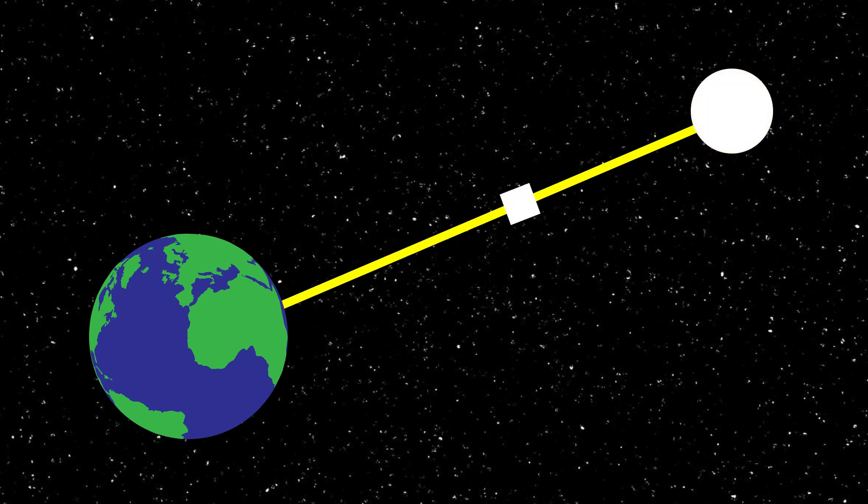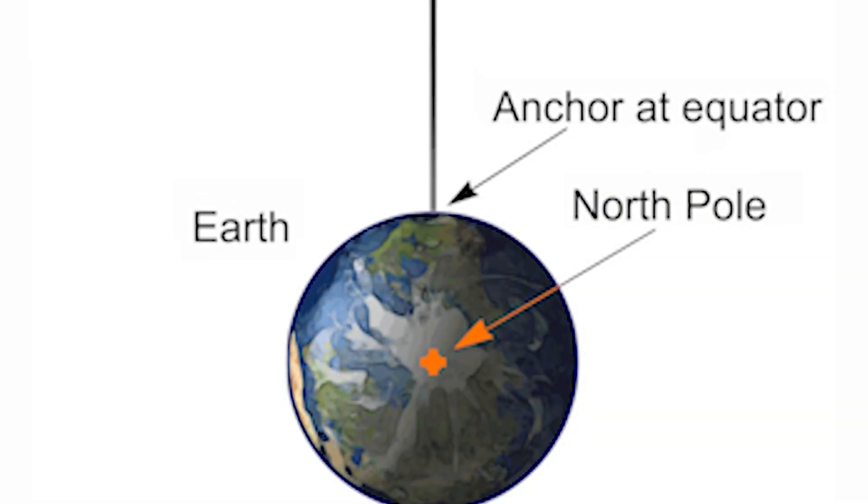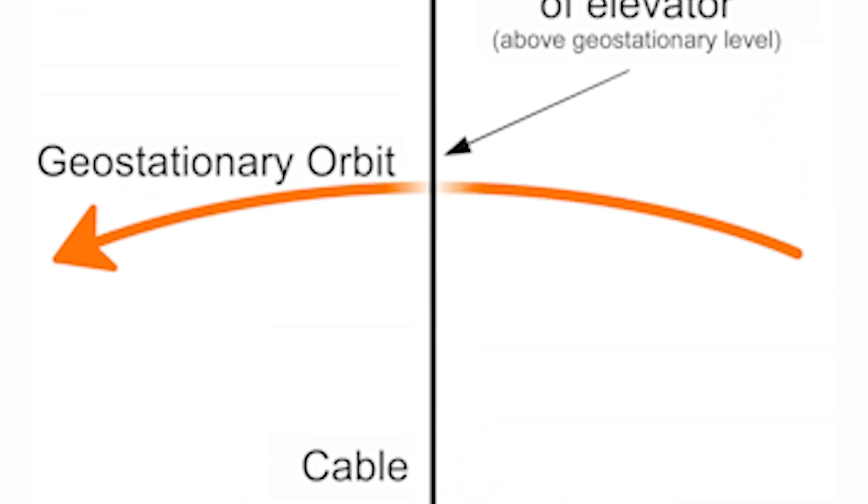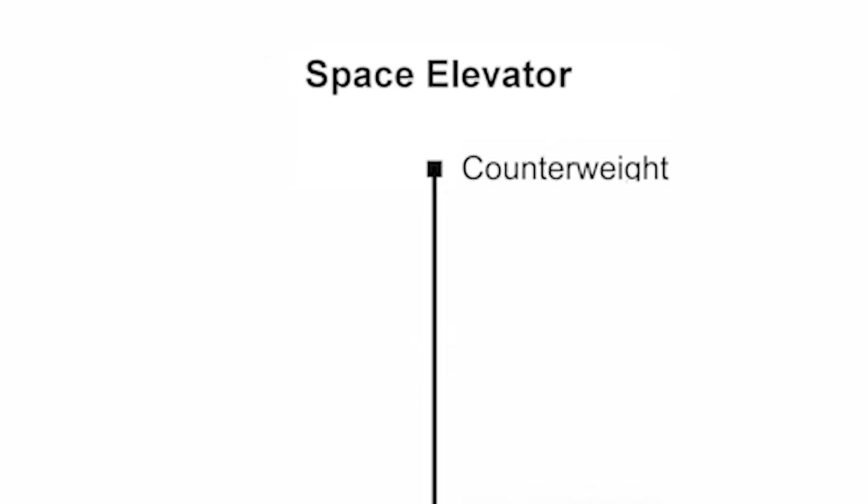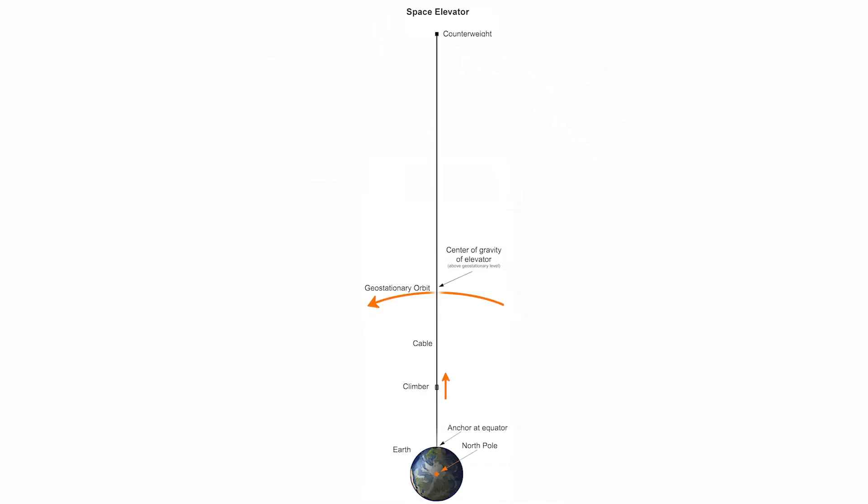The cable is the long tether that would stretch from the Earth into space. For the system to remain stable, the space elevator cable would probably need to be around 60,000 miles long. For reference, that's over a quarter of the distance to the Moon, or about 7.5 times the diameter of the Earth.